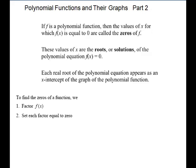We're going to look for these, we call them zeros or x-intercepts. If f is a polynomial function, then the values of x for which f(x) equals 0 are called the zeros of f.